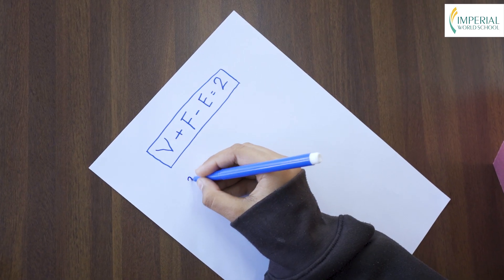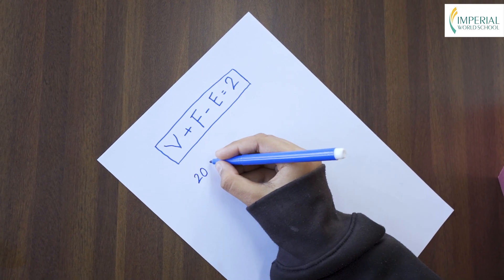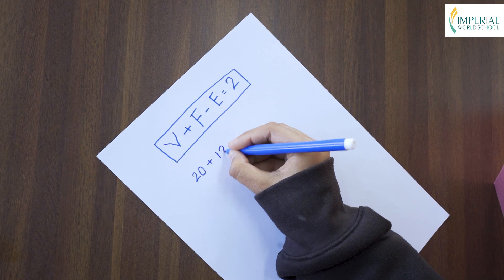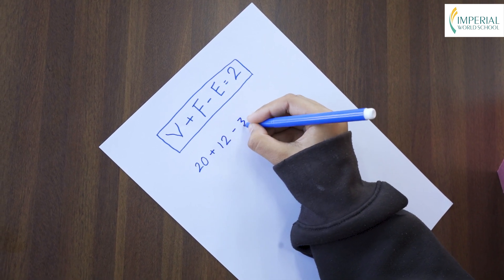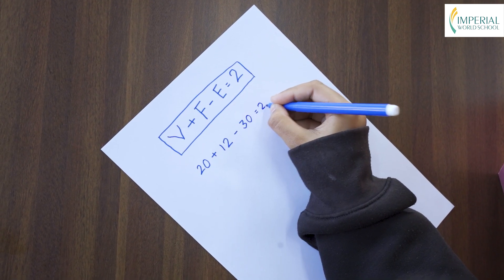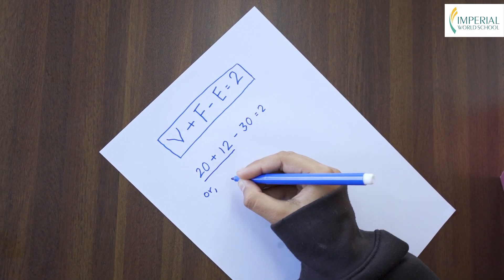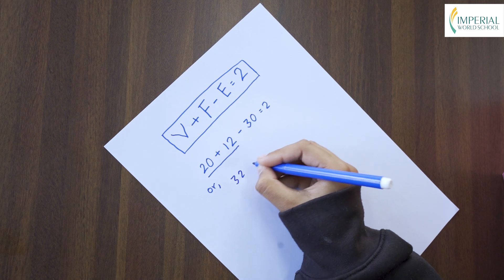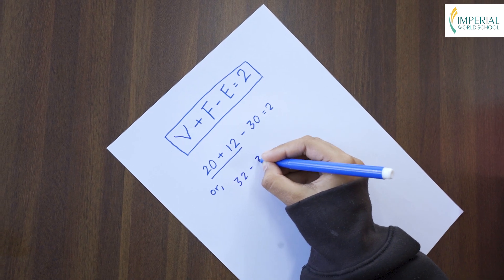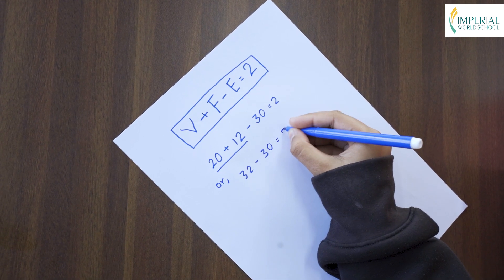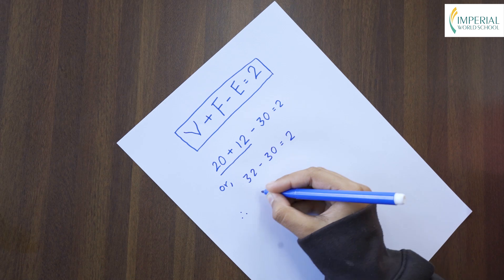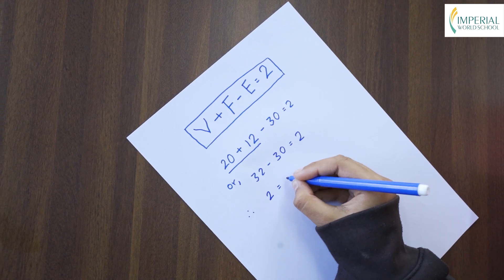The property of a dodecahedron is V plus F minus E equals 2. As we know, there are 20 vertices plus 12 faces minus 30 edges equals 2 — the sum of 20 plus 12 is 32, minus 30 is equal to 2. Therefore, it proves that 2 is equal to 2.